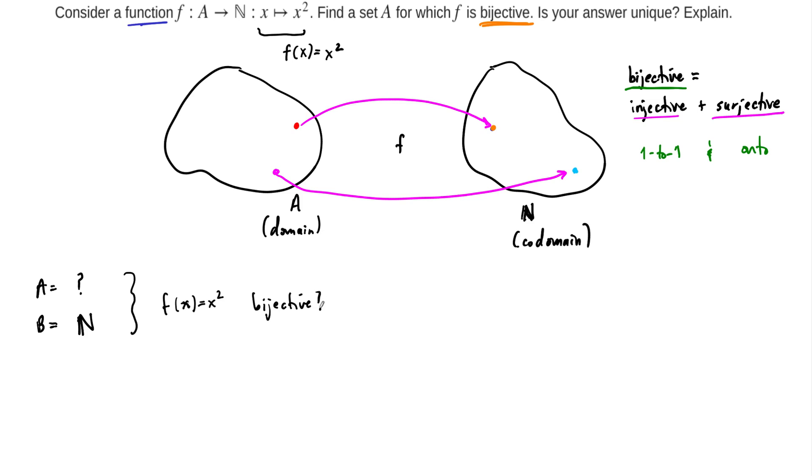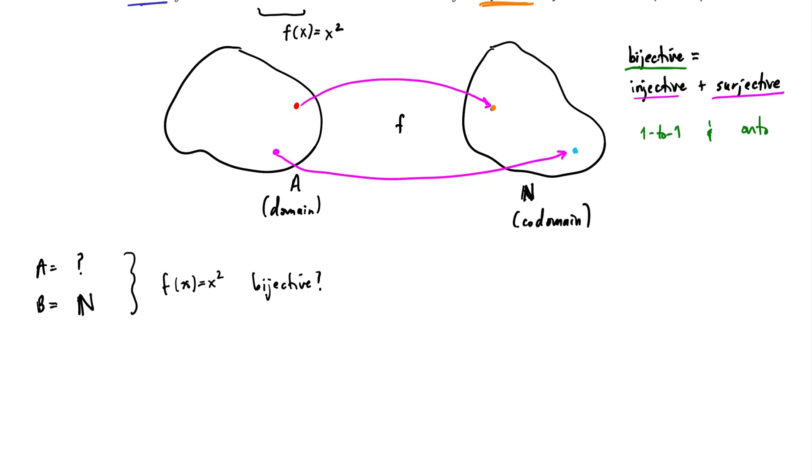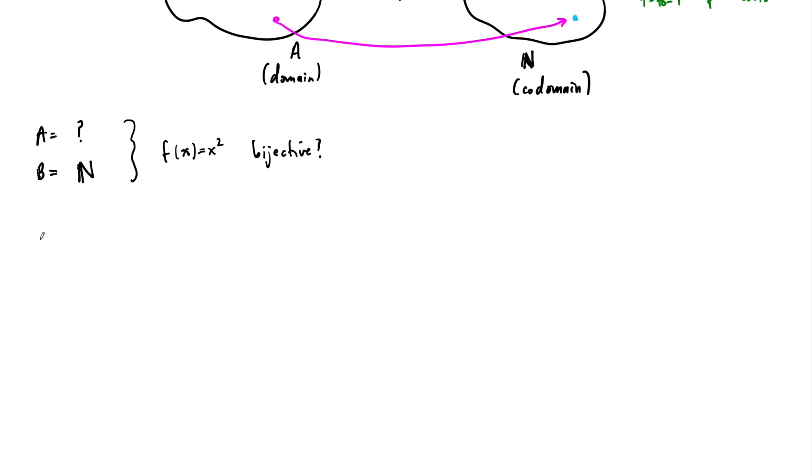We're given the formula f(x) = x², and we have to determine this set to make this bijective. Well, let's think about what happens. Let's just pick some of our favorite number sets. What if A is equal to the natural numbers also? If A equals the natural numbers, remember the natural numbers are the set {0, 1, 2, 3, 4, ...}.